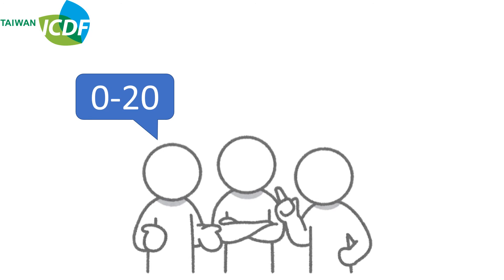Let's have some practice now. First practice, count from 0 to 20. Now, let's read it again together and check the answers. 0, 1, 2, 3, 4, 5, 6, 7, 8, 9, 10, 11, 12, 13, 14, 15, 16, 17, 18, 19, 20.